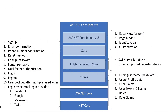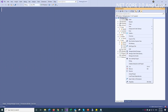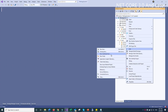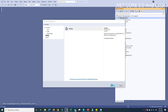In .NET Core 3, the UI becomes a Razor class library. The UI library contains Razor views and page models. You may ask yourself: it's a library that contains views — so what if I want to customize the views or the behavior in page models? You can do that by scaffolding identity into your web application and customizing it.